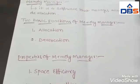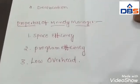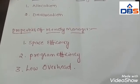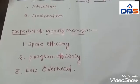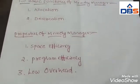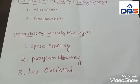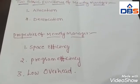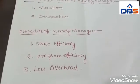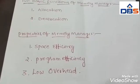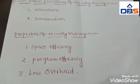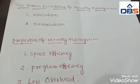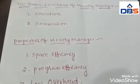What are the properties of a memory manager? There are three properties: space efficiency, program efficiency, and low overhead. If a memory manager has space efficiency, it should minimize the total heap space required by a program. If a memory manager has program efficiency, it should make better use of space to run the program faster and increase efficiency. If a memory manager has low overhead, then its allocation and deallocation should be efficient.